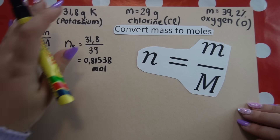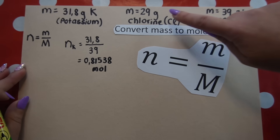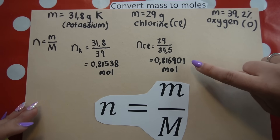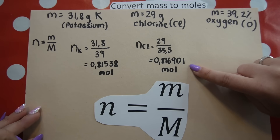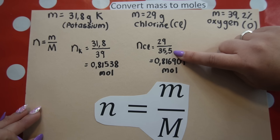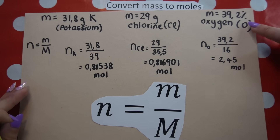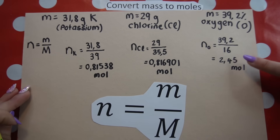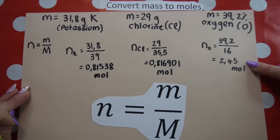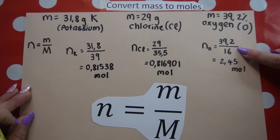Now the same for chlorine and oxygen. For chlorine: take the mass and divide by the atomic mass of chlorine, which is 35.5 from the periodic table. For oxygen: divide by the atomic mass of oxygen, which is 16, giving exactly 2.45 mol.